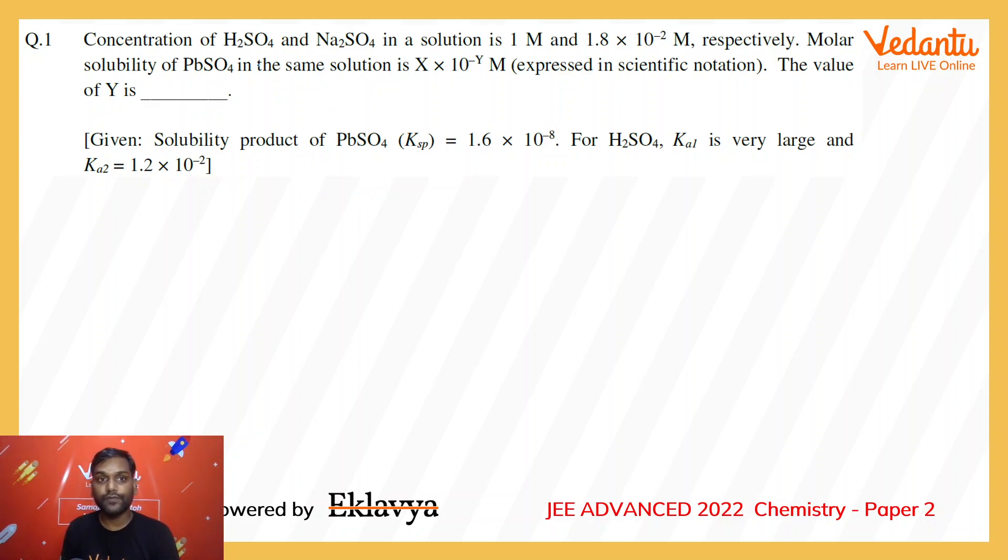If I write how much sulfate we are getting totally in the solution, there are two sources: one is sulfuric acid and one is sodium sulfate. Let's see how much is the total sulfate. Sulfuric acid will dissociate in the first step completely to form H+ and HSO4-. 1 molar sulfuric acid will produce 1 molar H+ ion and 1 molar HSO4- ion which will further dissociate to give H+ and sulfate ion.